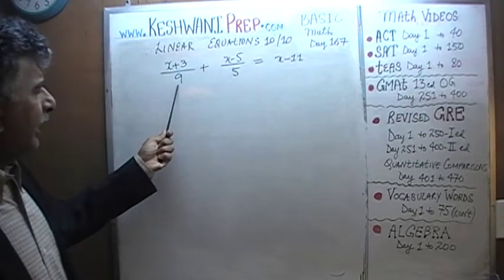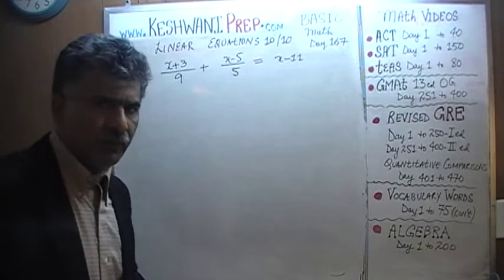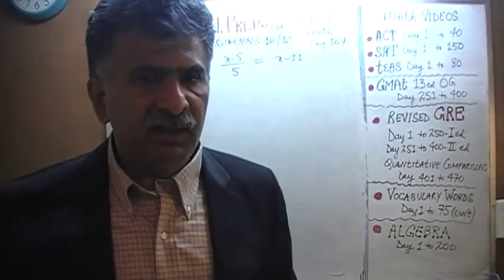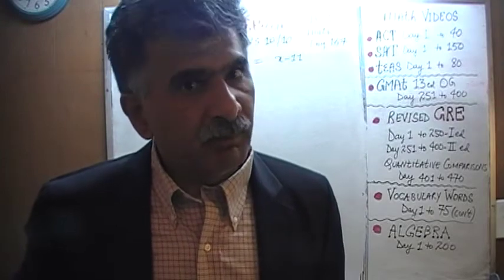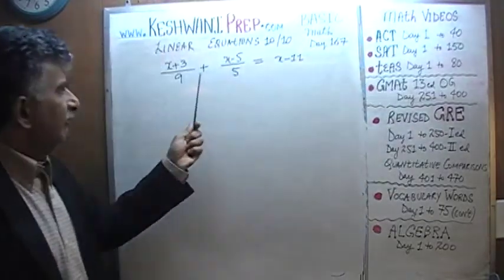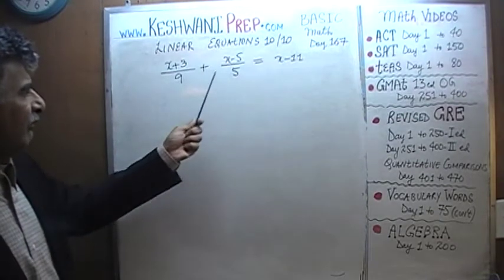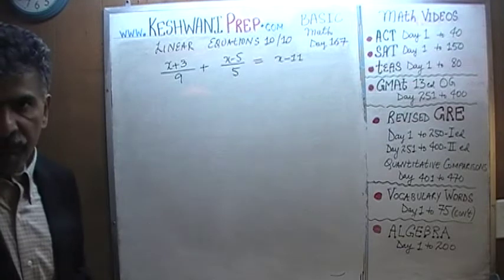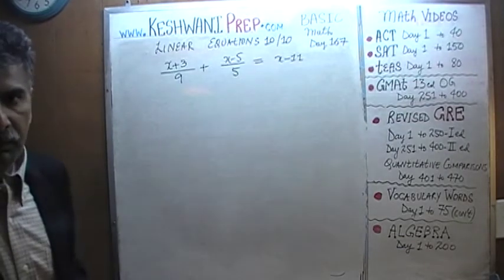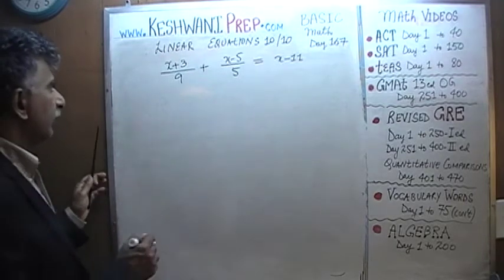Alright, we have a 9 here on the bottom, we have a 5 on the bottom, we have to somehow get rid of these denominators. The way we get rid of these denominators is by finding a number, preferably the smallest number that we can find, that is a multiple of both 5 and 9. The smallest number that we can think of, that is a multiple of both 5 and 9, is 45.